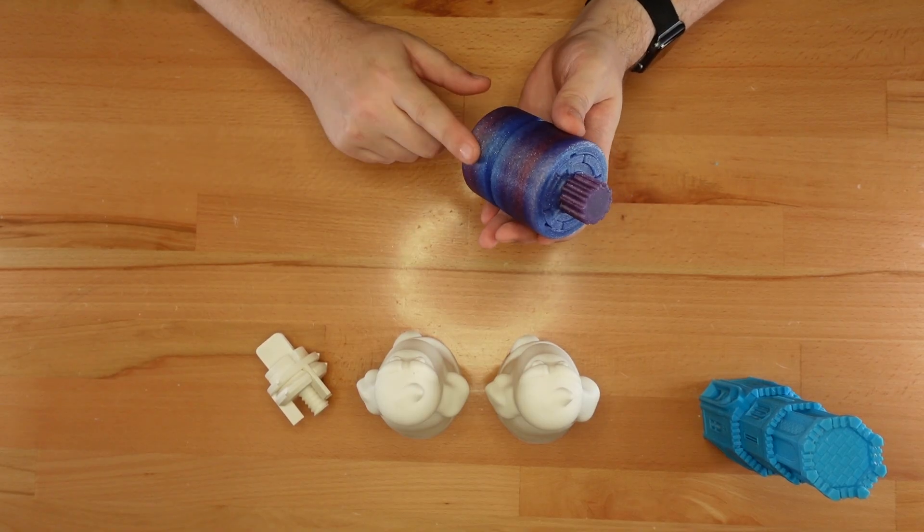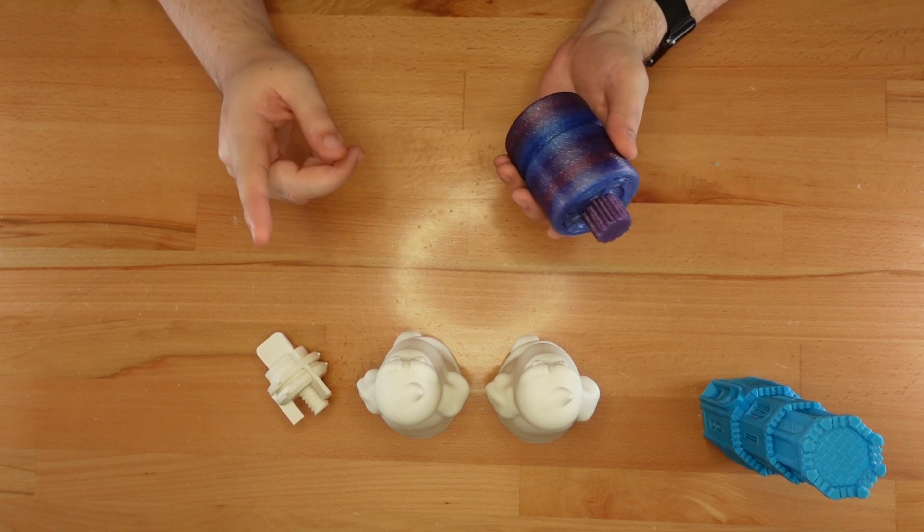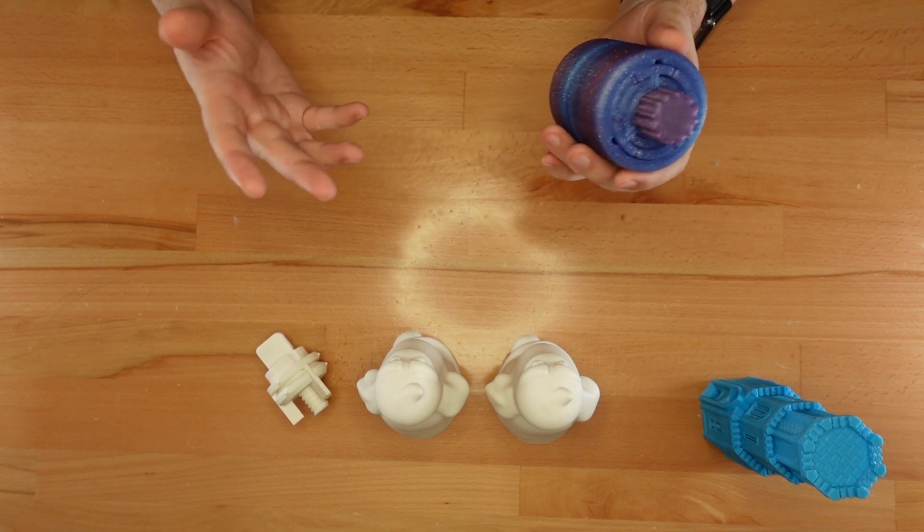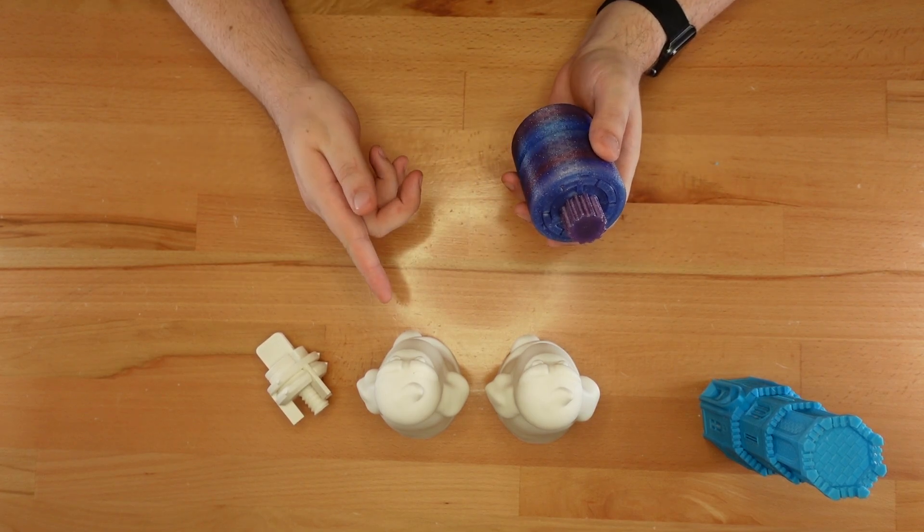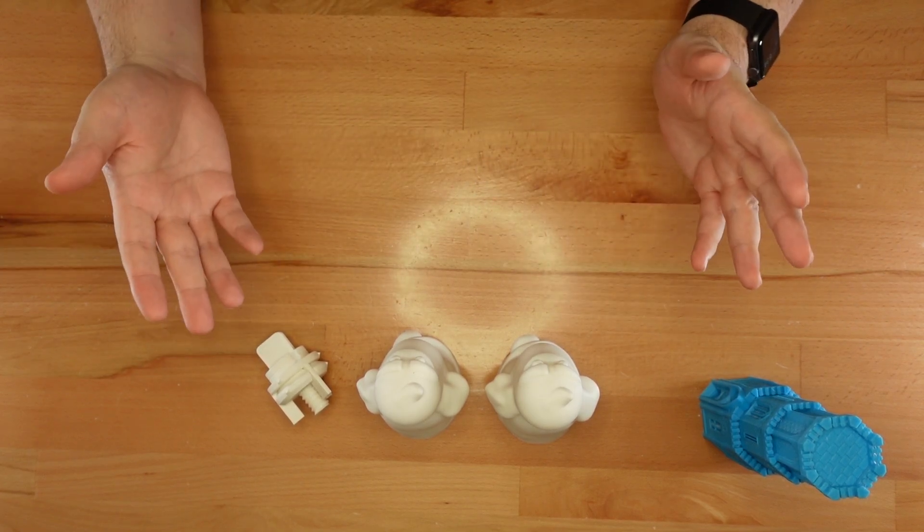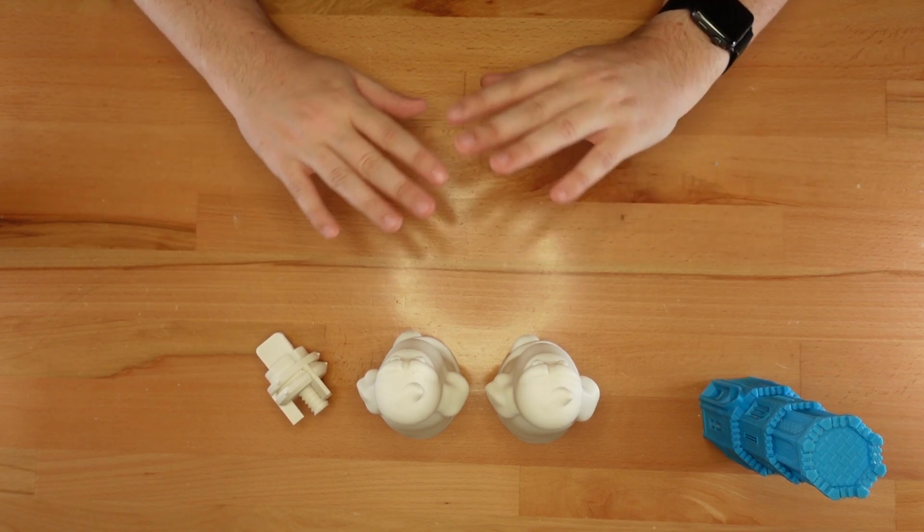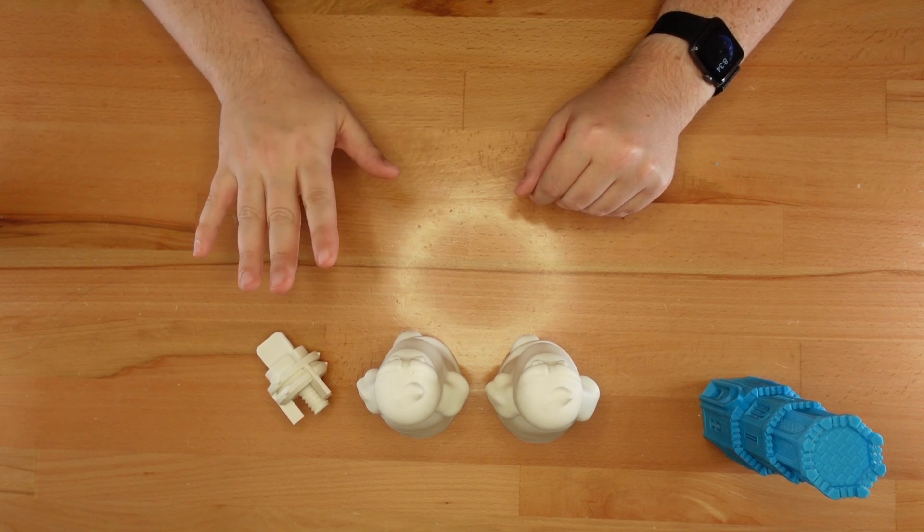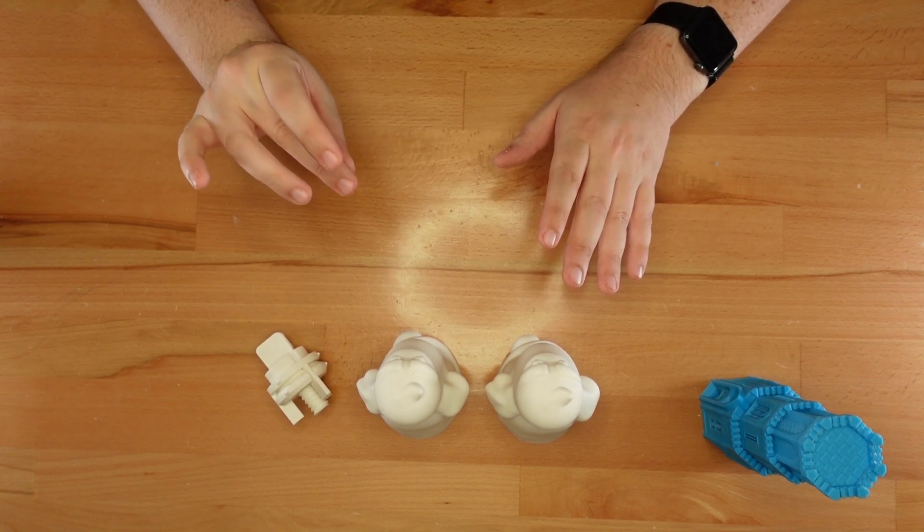If you've already made one of my print in place puzzles, you can skip printing the core and just reuse the one you already have. It's fully compatible with the new ghost shell. As you'd expect from a print in place design, this model also requires no supports. Just print slowly and make sure you have a really good first layer.